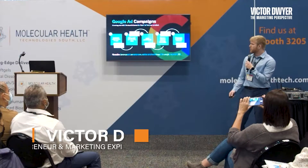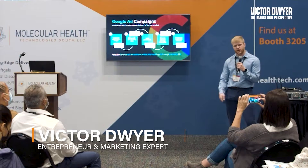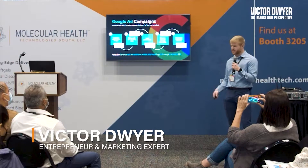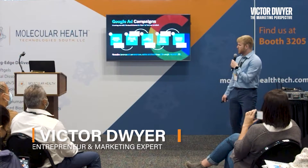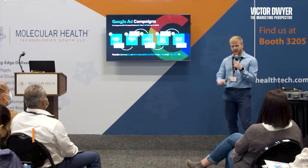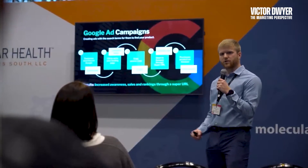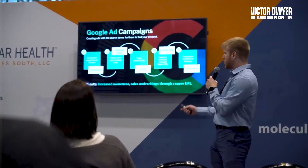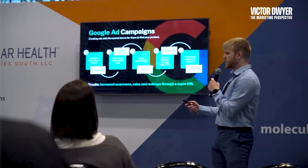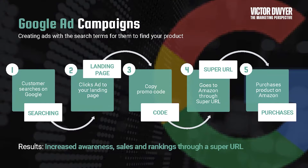And then this is Google for those very search intent based products like bedsheets. So the person can actually type in the word bedsheet on Google. They will go through the Amazon Google ad, the Google ad, and then they will go through a landing page, which will go to a promo code, which goes to a super URL, which the person ends up purchasing.